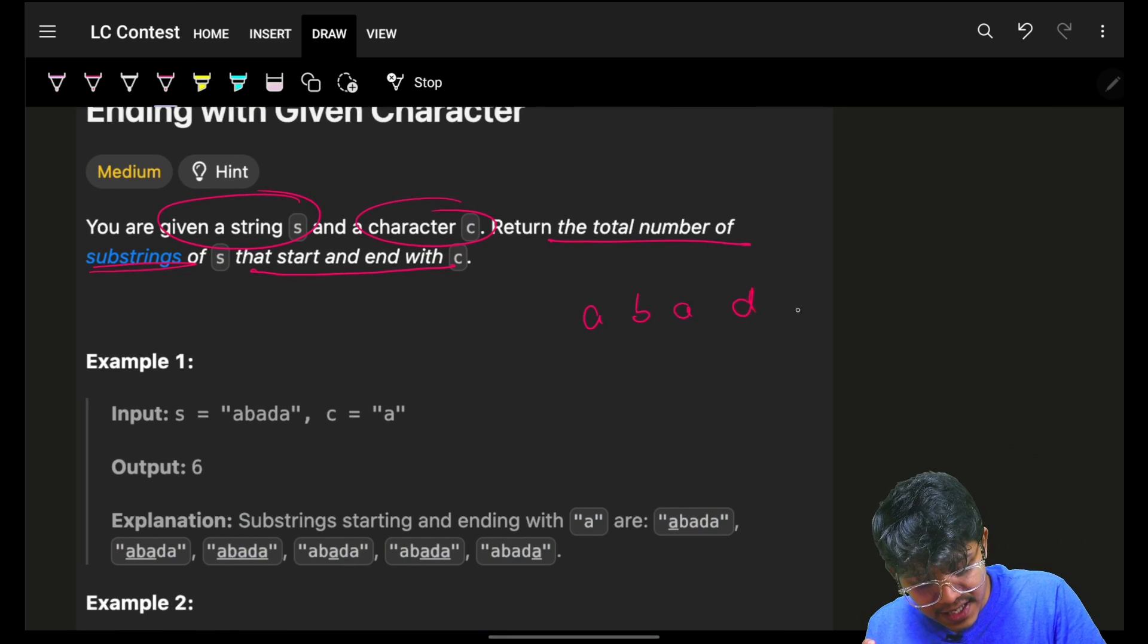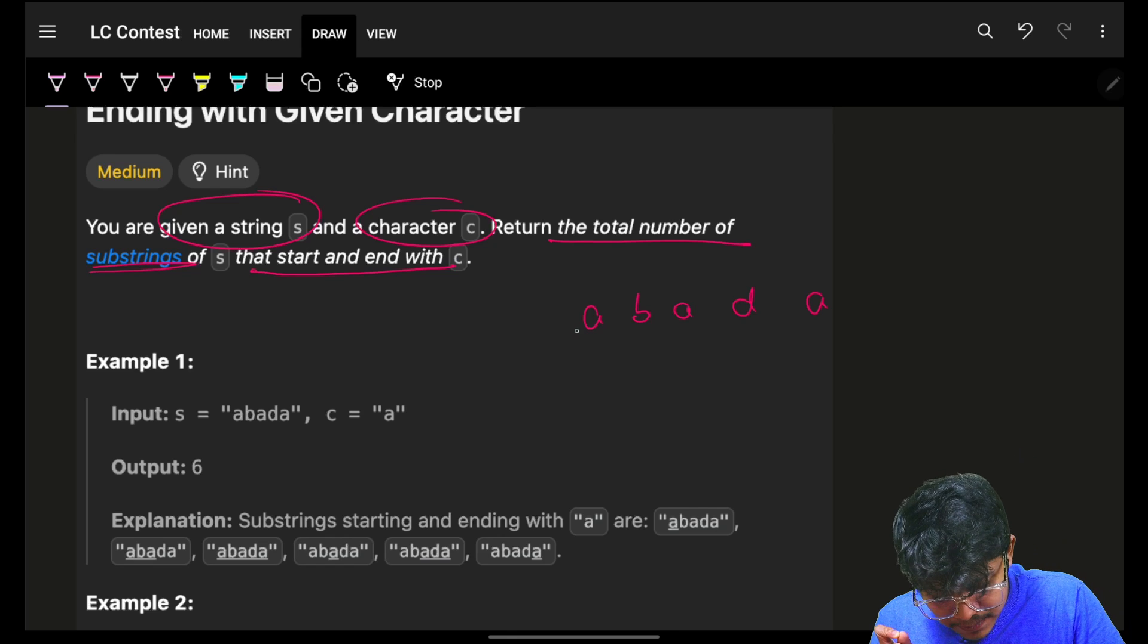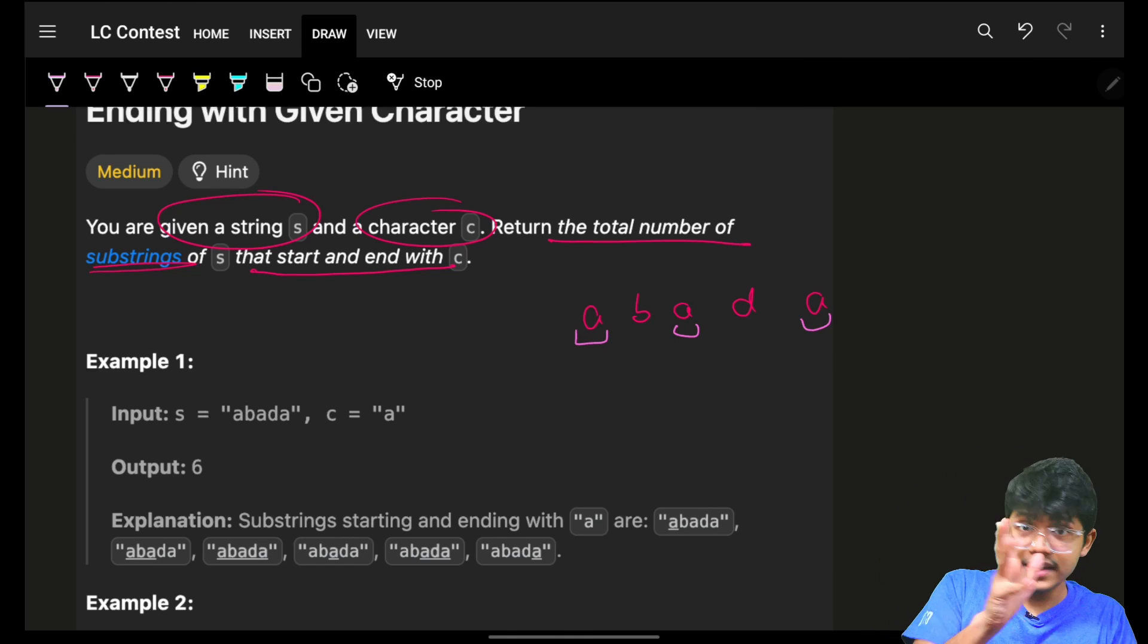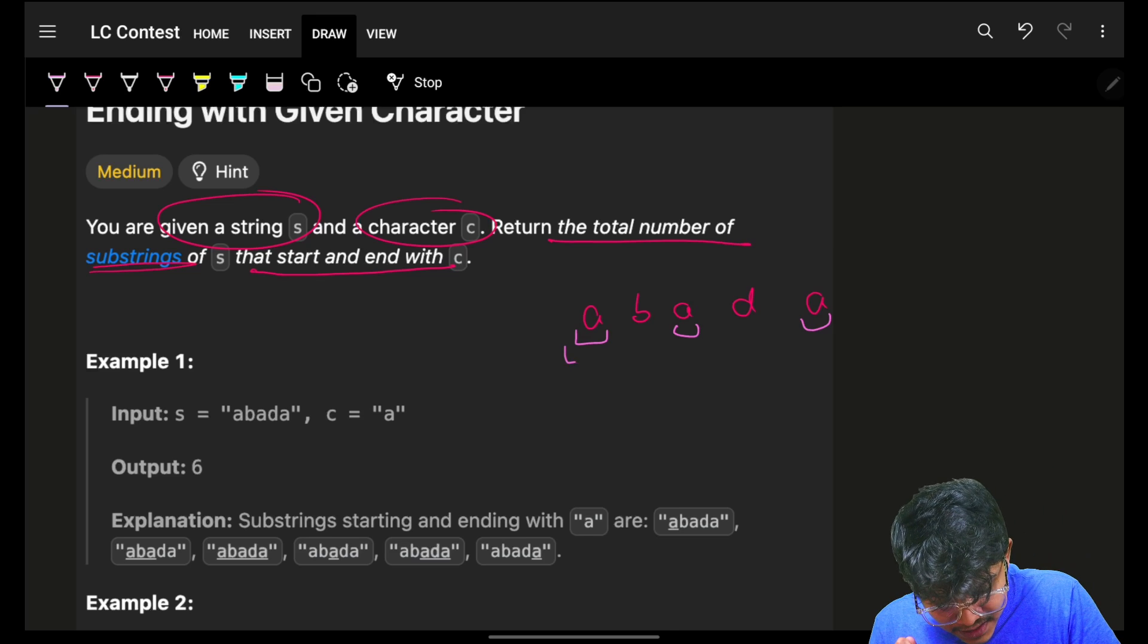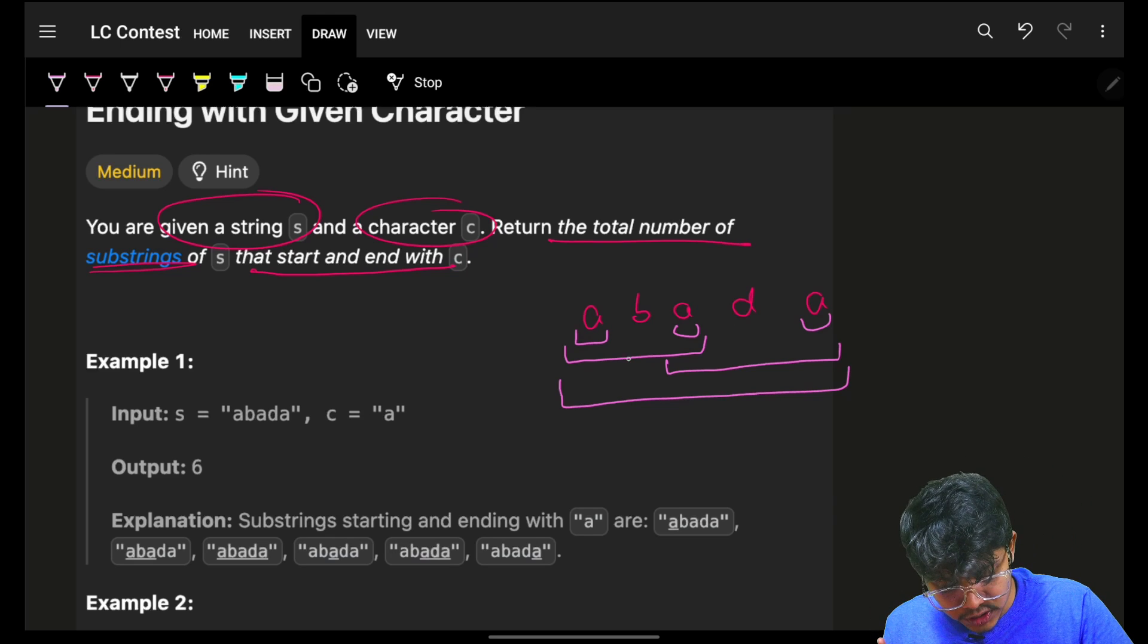abada, you want all these substrings that start and end with a. So you can simply see: a-a, a-a, this is one, these substrings, then a-a and a-a, then I can simply say a-a. These are all the possible substrings and I can see one, two, three, four, five, six. Six is the answer.